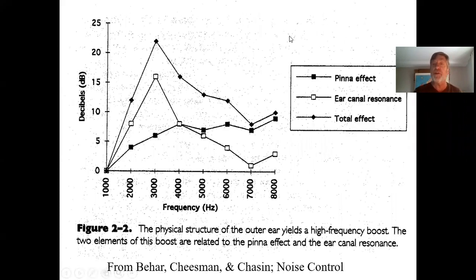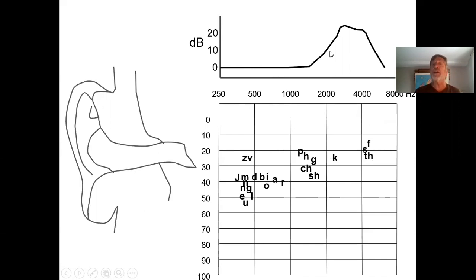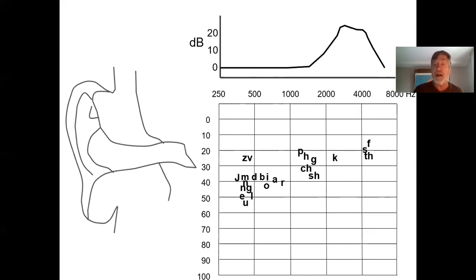On a speech audiogram you can see all the letters of speech — vowels are louder and lower, and as sounds get softer and higher, that's where outer ear canal resonance helps. The ear canal resonance acts like a natural lift for these soft high-frequency consonants.